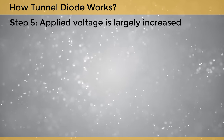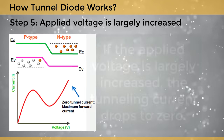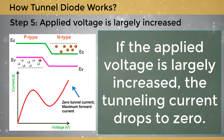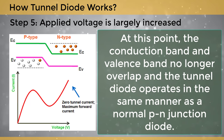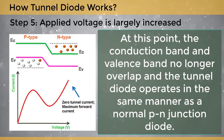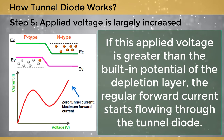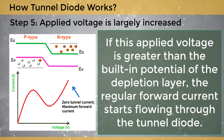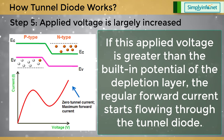Step 5: Applied voltage is largely increased. If the applied voltage is largely increased, the tunneling current drops to zero. At this point, the conduction band and valence band no longer overlap, and the tunnel diode operates in the same manner as a normal p-n junction diode. If the applied voltage is greater than the built-in potential of the depletion layer, the regular forward current starts flowing through the tunnel diode.